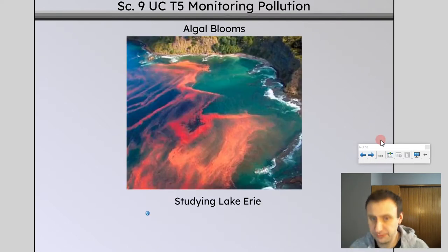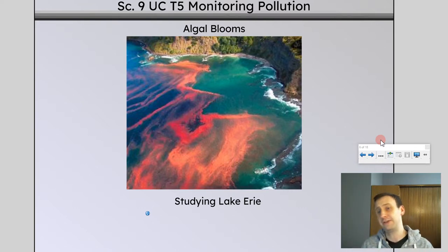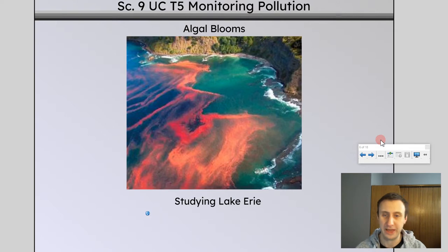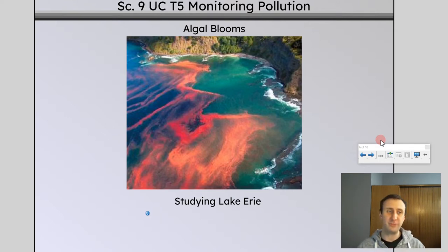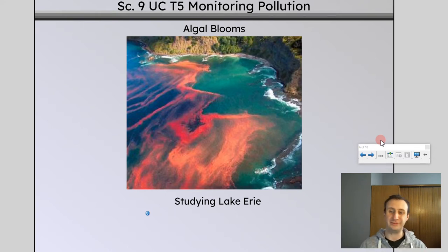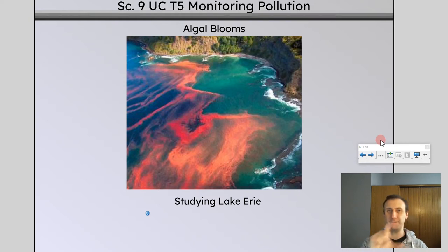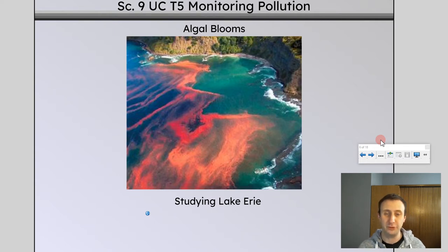Algal blooms — when we have a lot of algae growing in an aquatic ecosystem, we call that an algal bloom. That normally happens because we have nitrates or phosphates added. Where do nitrates and phosphates come from? A big thing is fertilizer. As you learned, fertilizer is NPK: nitrogen, phosphorus, potassium. So when we have a lot of fertilizer making it in, that causes an algal bloom.